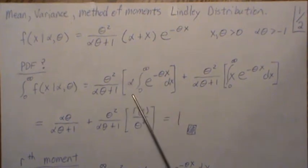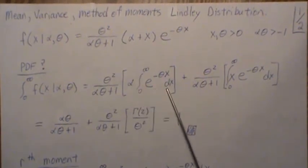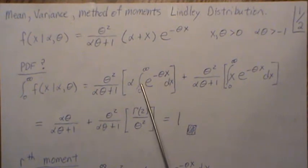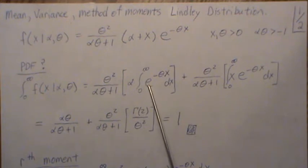So the first one here, we factor out all the constants. This looks like an exponential distribution. If this had a times theta, then this would integrate to one. Since it's not there, it integrates to one over theta.